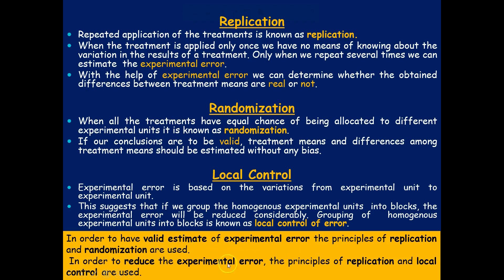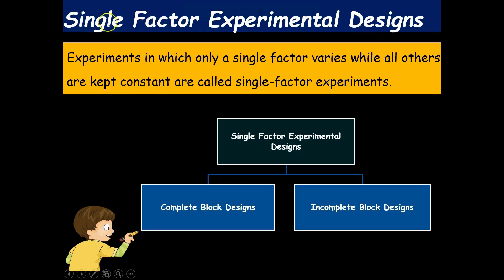To reduce experimental error, a blend of replication and local control is used. These three — replication, randomization, and local control — are the basic principles of experimental design and are used in almost all designs, although there are some exceptions.